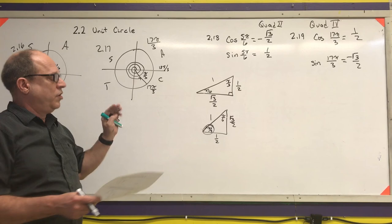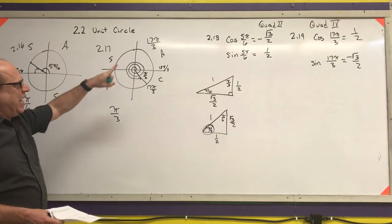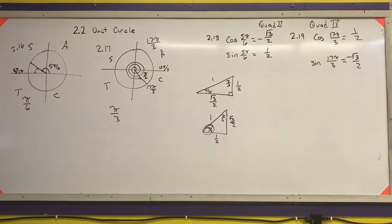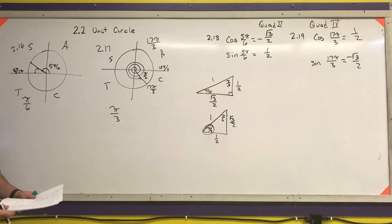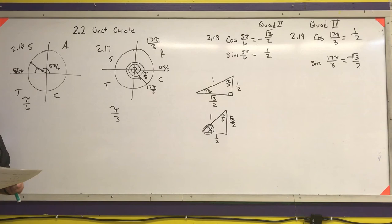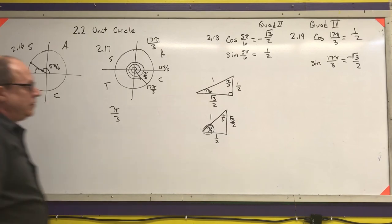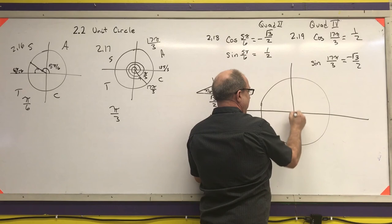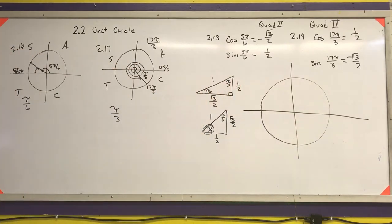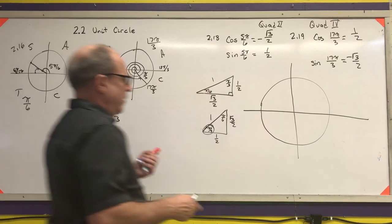Sine and cosine only depend on the terminal side of the angle, so coterminal angles have the same sine and the same cosine. That covers the first part of our unit circle discussion. My recommendation is to do practice problems, verify you get the right answers, and then do the homework. Become comfortable finding the coordinates for every special triangle point on the unit circle.